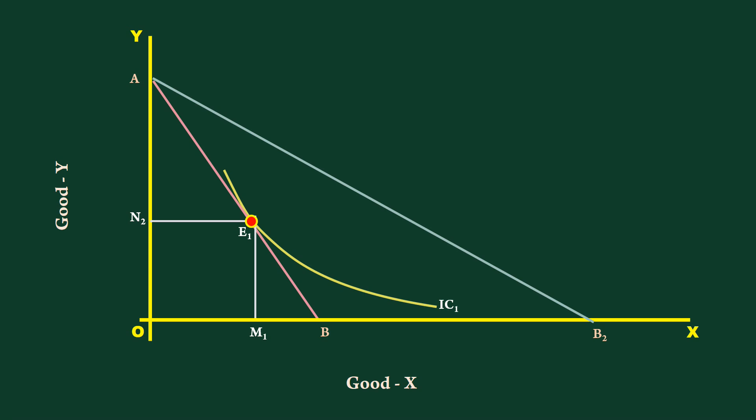Slutsky wants to do away with income effect in deriving the valid demand theory. He eliminates the increase in quantity that takes place due to increase in real income of the consumer by reducing the income by cost difference.